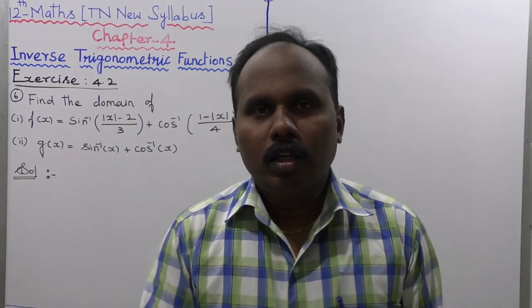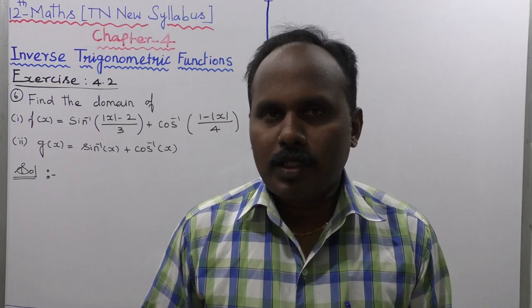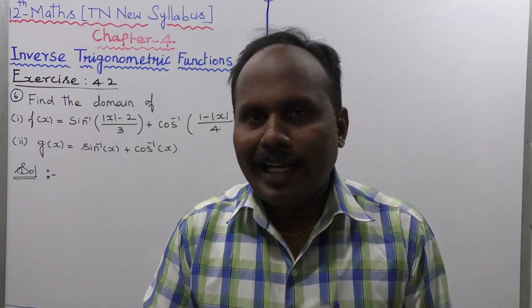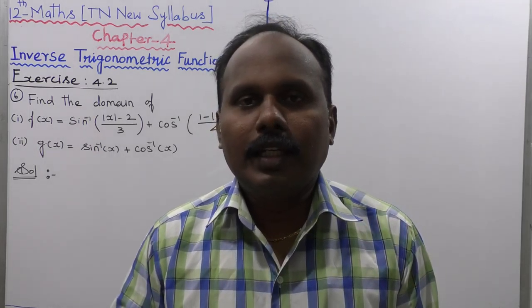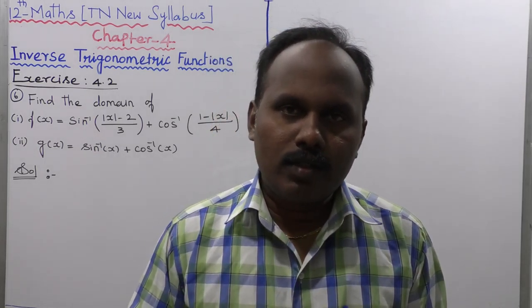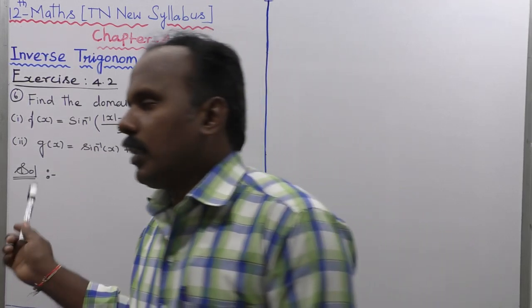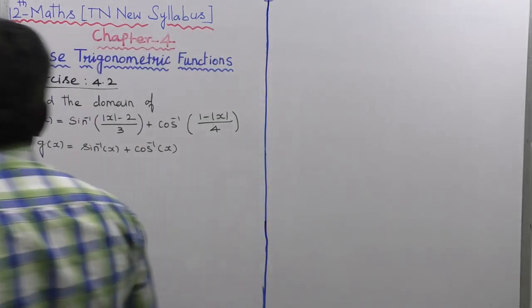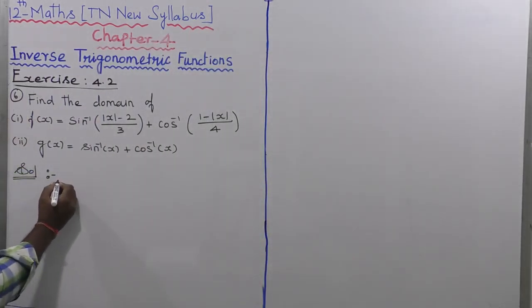This is also the union of minus 1 comma plus 1 and minus 1 comma plus 1. Adding these two intervals, that is equal to minus 1 comma plus 1. That is the answer. Very simple — the second subdivision is very simple.